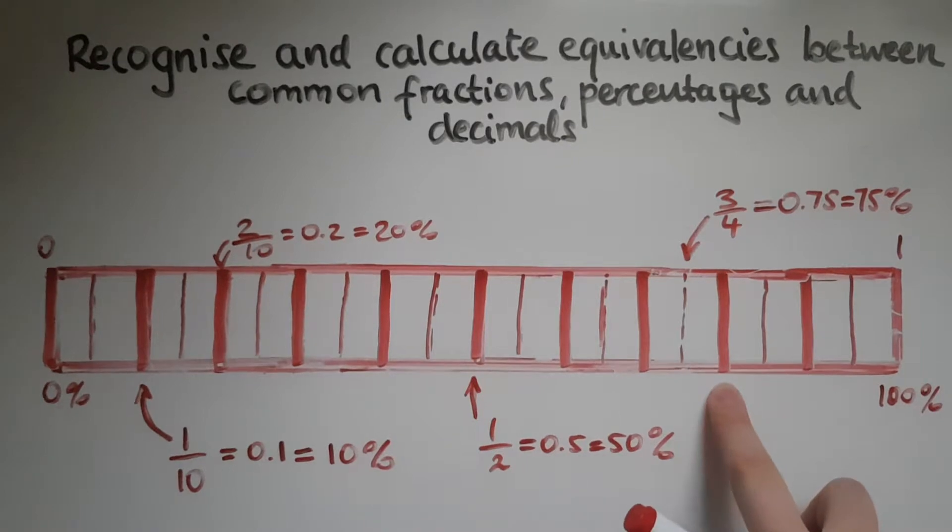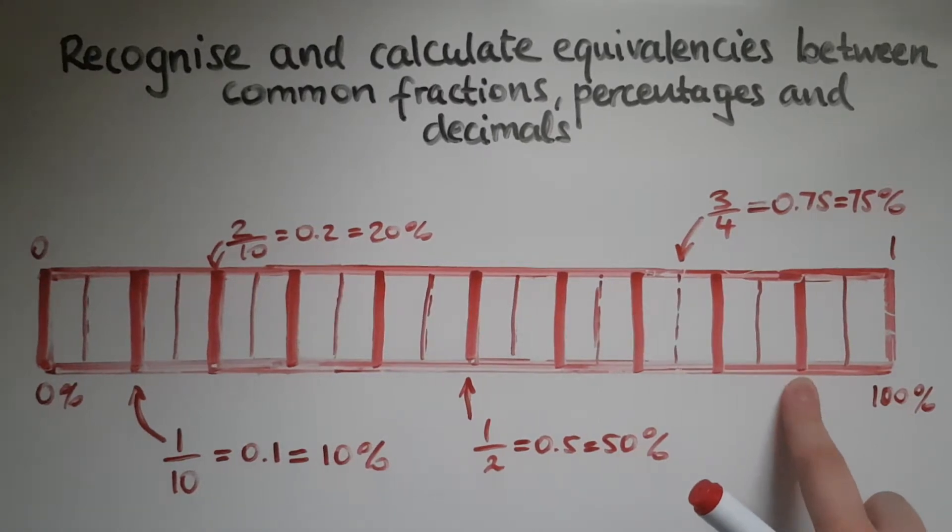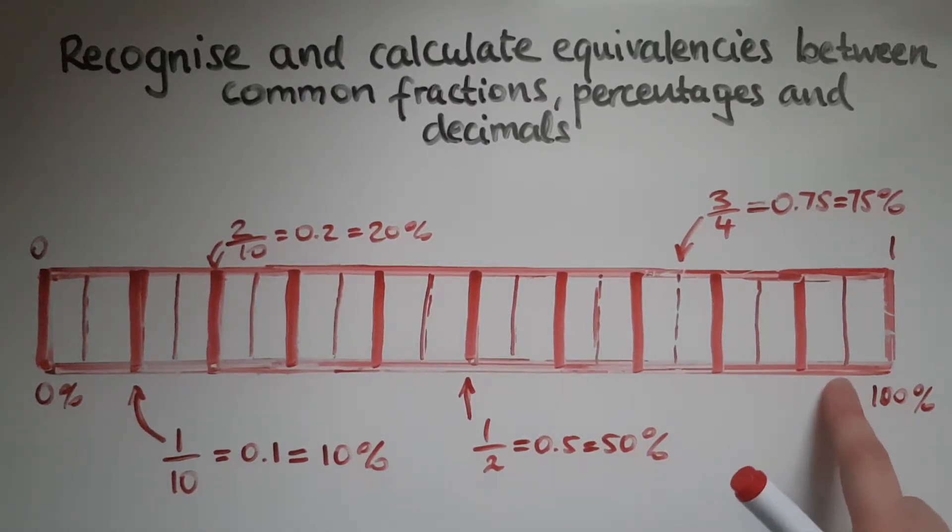This one here would be 8 out of 10 which is 80% or 0.8. This would be 90% which is 9 out of 10 or 90%. This is 95%, 0.95 and it is 95 out of 100 as well.